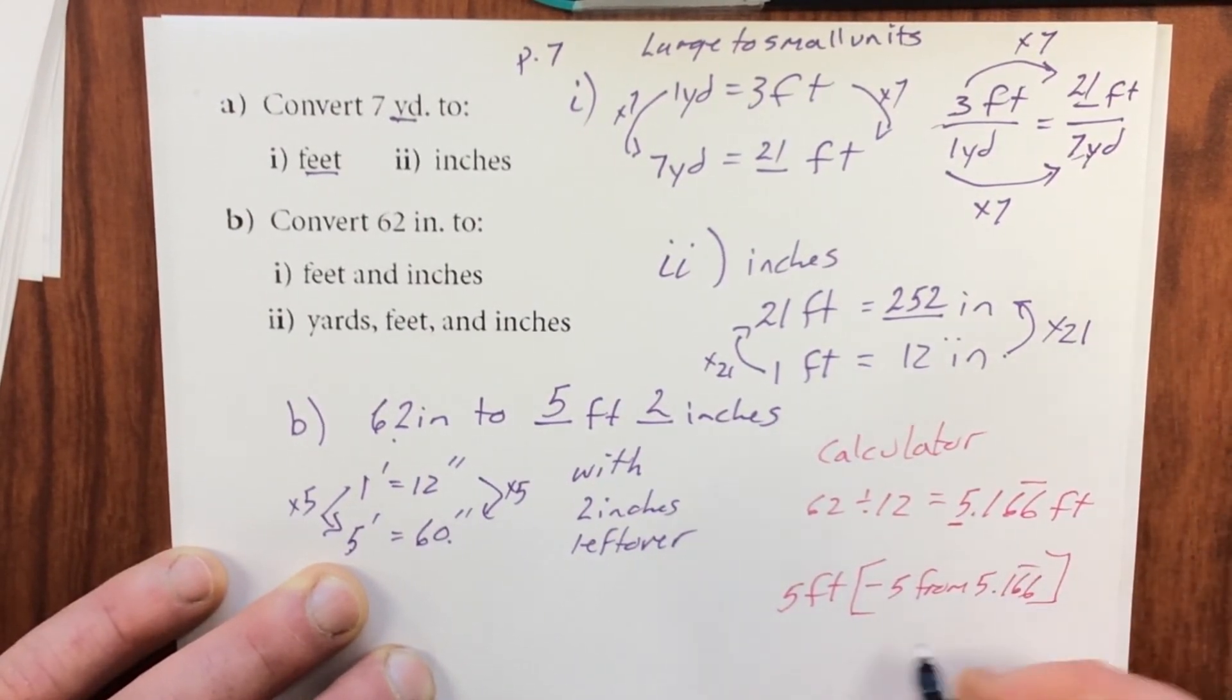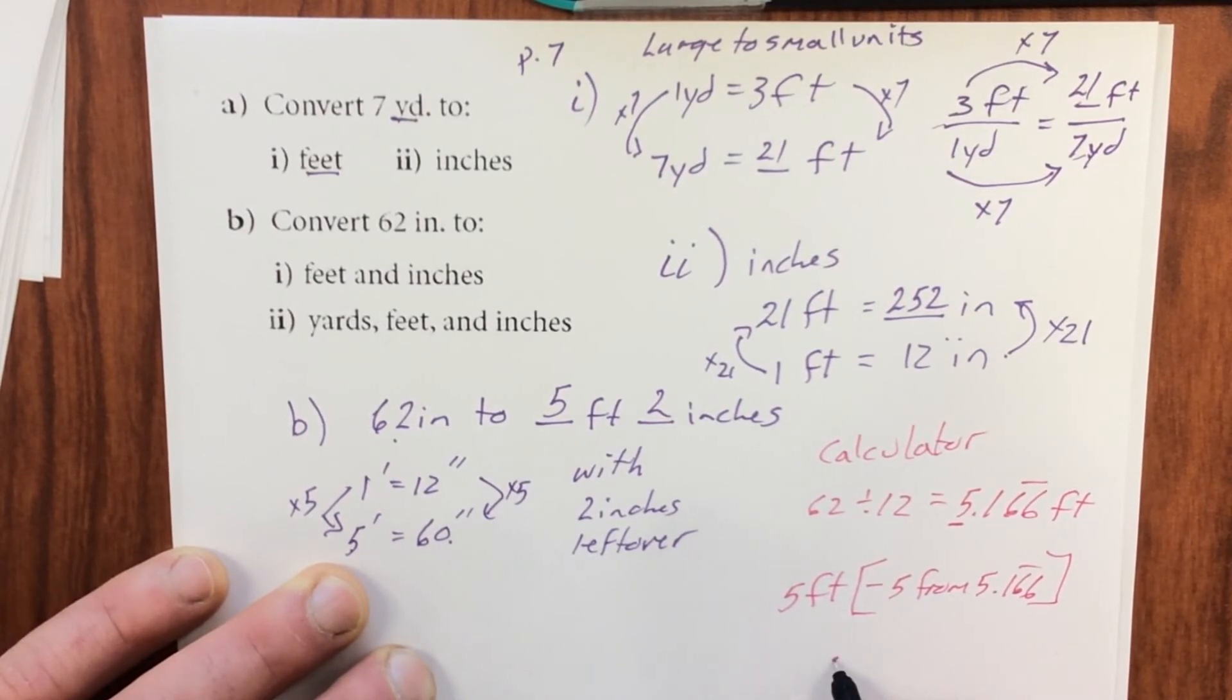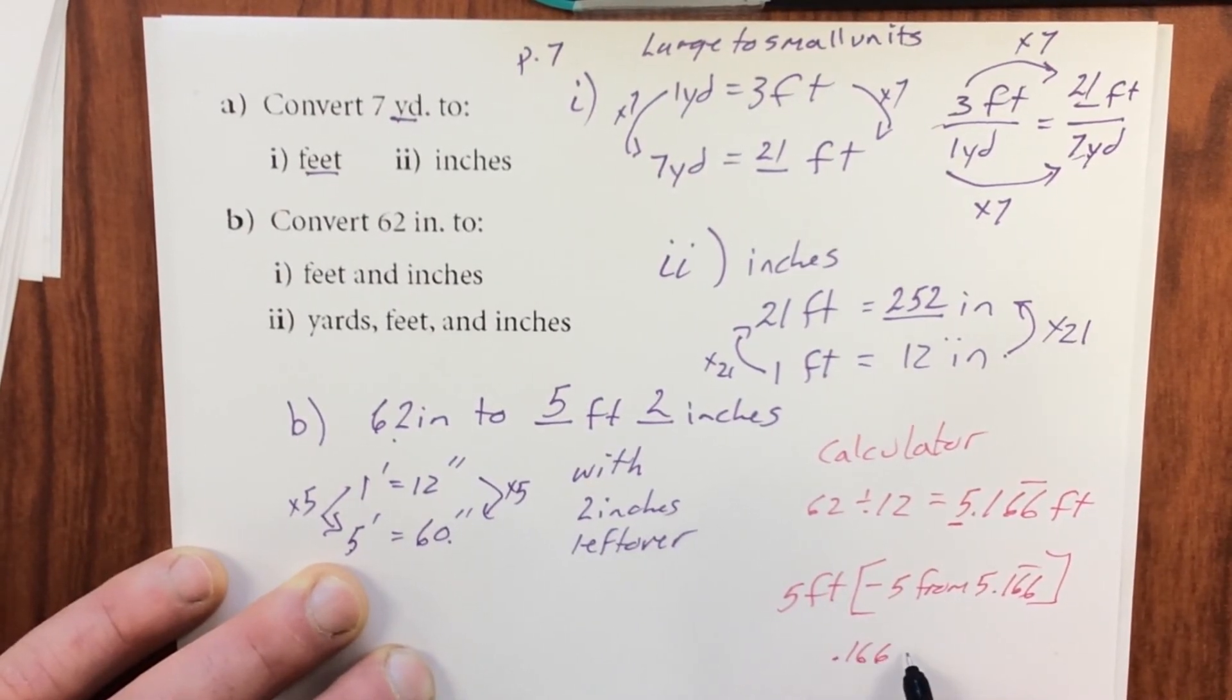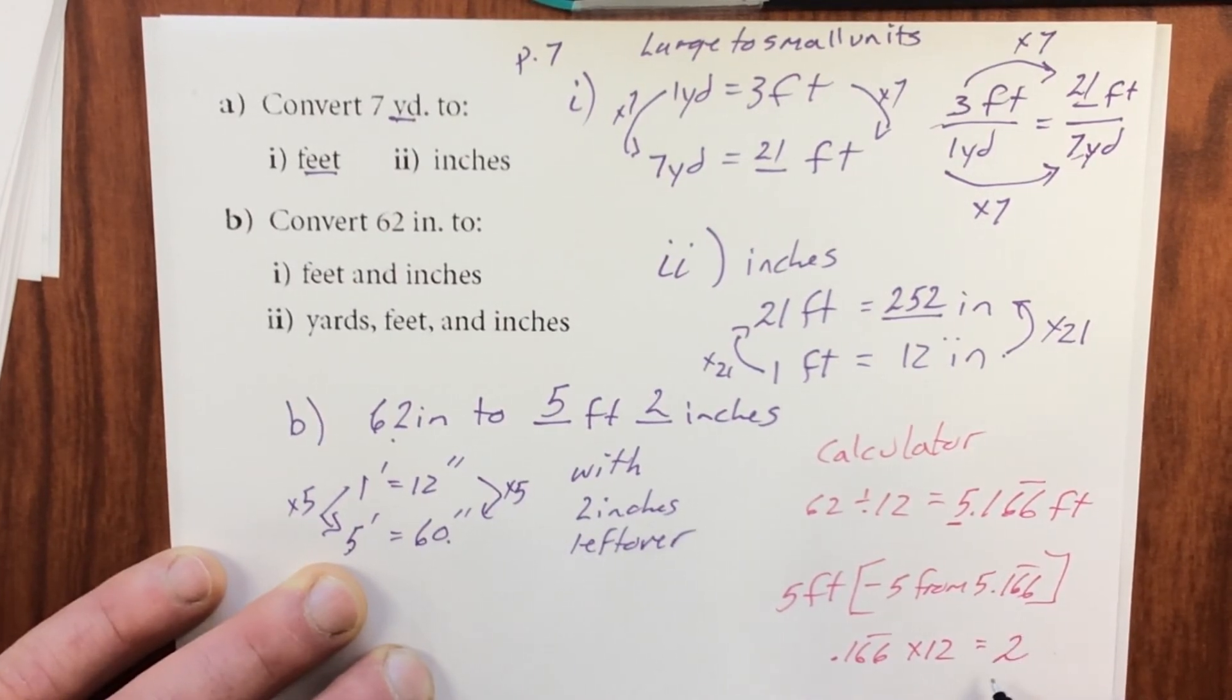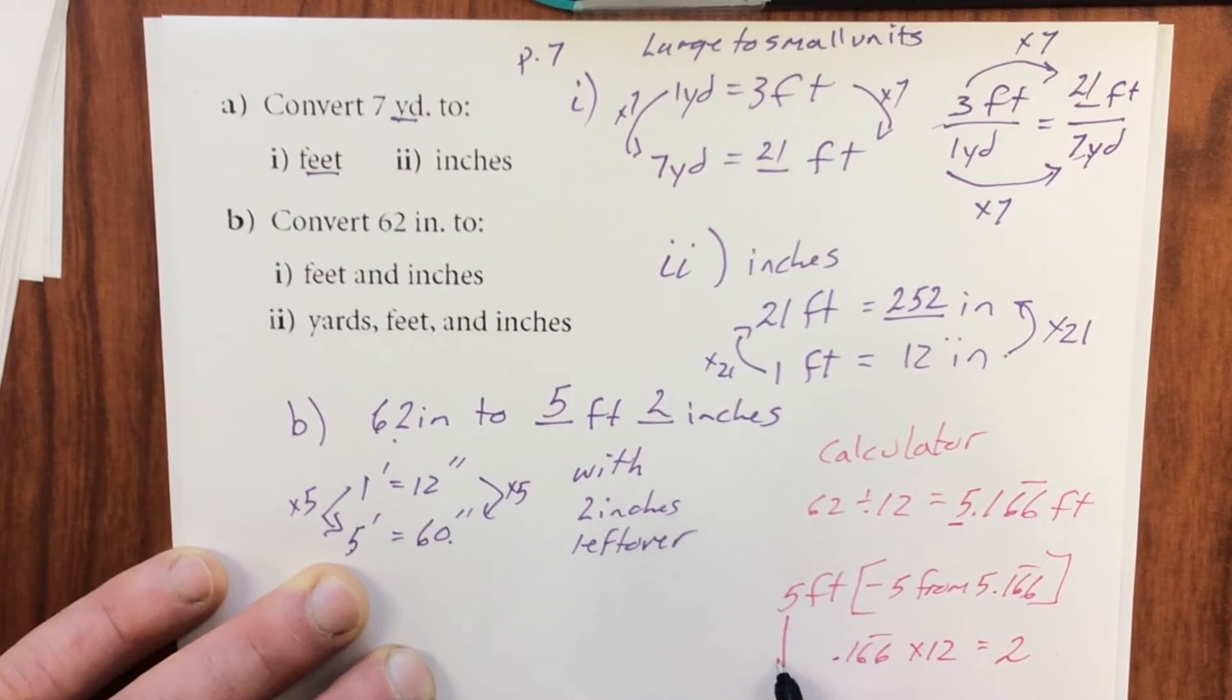Repeat. So I'm left with 0.166. Repeat. So I'm going to multiply that by 12. And that equals 2. So I get my five feet.